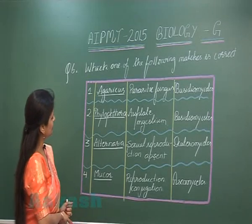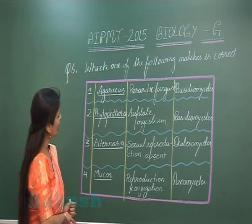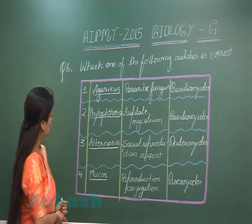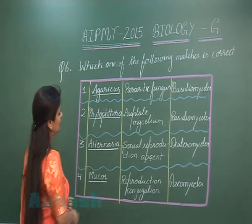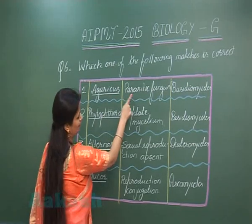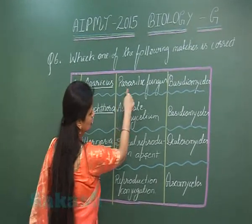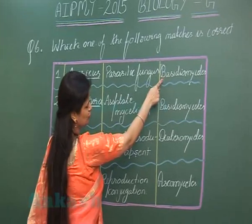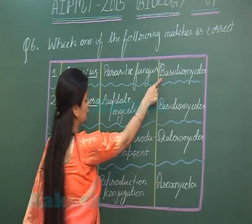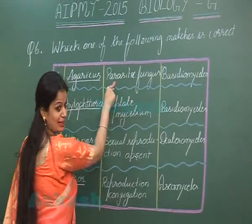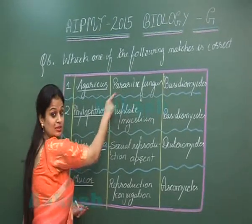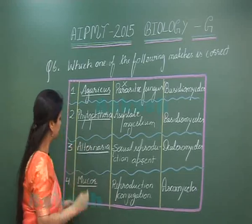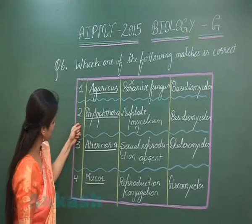In question number six, we have to find the correct match. Looking at option one: Agaricus is listed as a parasitic fungus belonging to Basidiomycetes. Yes, it does belong to Basidiomycetes and it is a mushroom, but it is not parasitic — it is a saprophytic fungus. So option one is incorrect.